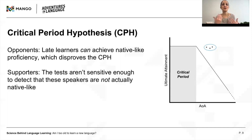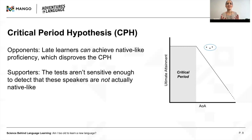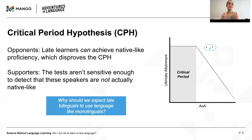But in return, critical period supporters claim that more sensitive language tests would reveal that such speakers aren't really native-like after all. But there's a fundamental problem with this line of evidence. It's common to see monolingual native speakers used as a benchmark for evaluating gifted late L2 learners in critical period studies. But gifted L2 learners aren't monolingual. Bilingual native speakers perform differently from monolinguals on many tests of language, so it seems misguided to expect late bilinguals to act like monolinguals at all.